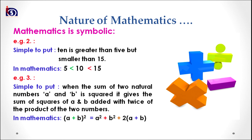There is another example: when the sum of two natural numbers a and b is squared, it gives the sum of squares of a and b added with twice the product of the two numbers. Isn't it confusing as a verbal statement? When we convert it into a mathematical expression, we can write (a + b)² = a² + b² + 2ab. This makes the expression much more clear.